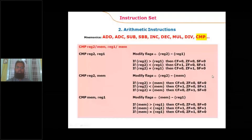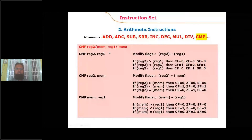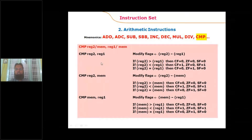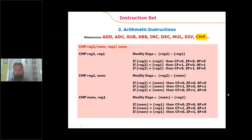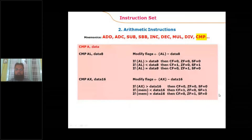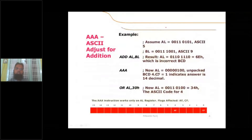The CMP instruction is used to affect flags — carry flag, zero flag, and sign flag — without storing a result. There are also BCD and ASCII adjustment instructions: AAA (ASCII Adjust after Addition) converts an unpacked BCD result back to the correct ASCII result after adding two ASCII values. AAS (ASCII Adjust after Subtraction) converts the unpacked BCD result of subtracting two ASCII values back to ASCII.